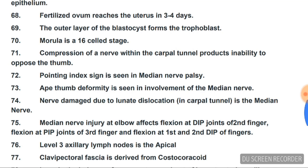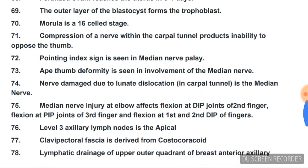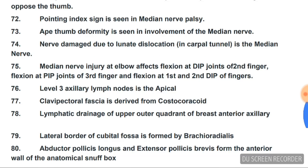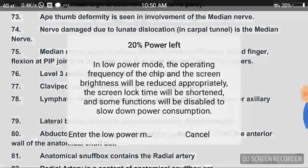Fertilized ovum reaches the uterus in three to four days. The outer layer of the blastocyst forms the trophoblast. Morula is the 16-cell stage. Compression of a nerve within the carpal tunnel produces inability to oppose the thumb. Pointing index sign is seen in median nerve palsy. Nerve damage due to lunate dislocation involves the median nerve.